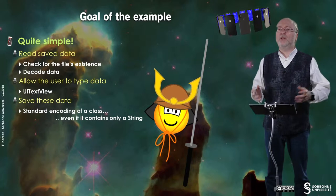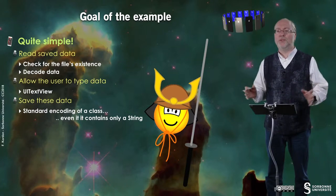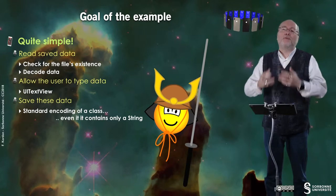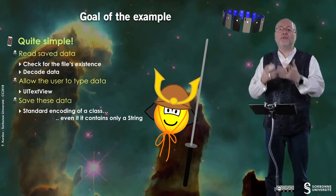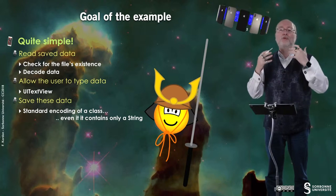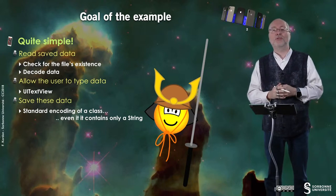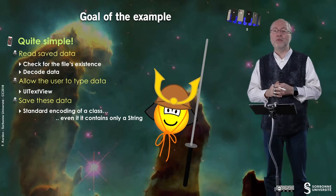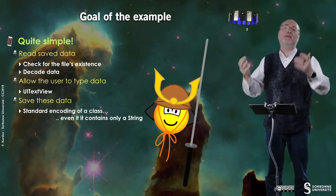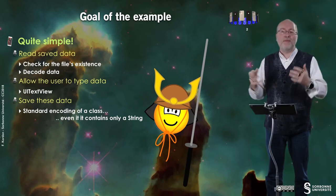Hello everybody. In this video I will present you the memory example. The goal of this example is quite simple: it's just to read saved data. Check if a file exists. If the file exists, then you have data in it and you load it. You show this information to the user in the UI TextView, and the user may change it and decide to save these changes.